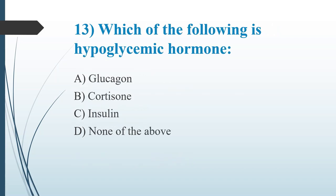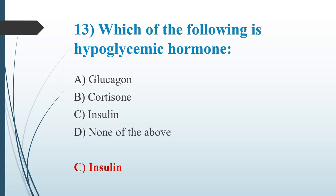Thirteenth question: Which of the following is a hypoglycemic hormone? Option A: Glucagon. Option B: Cortisone. Option C: Insulin. Option D: None of the above. The answer is Option C, insulin. Insulin decreases glucose in blood and activates glycolysis for the conversion of glucose to pyruvate. Glucagon and cortisone decrease glycolysis, so they are inhibitors of the glycolytic pathway.